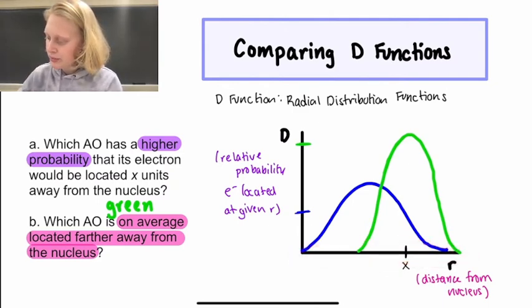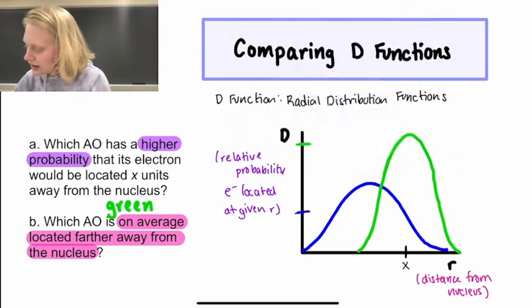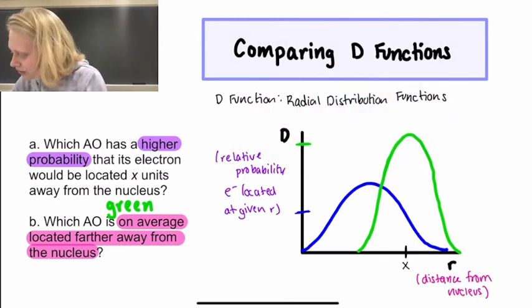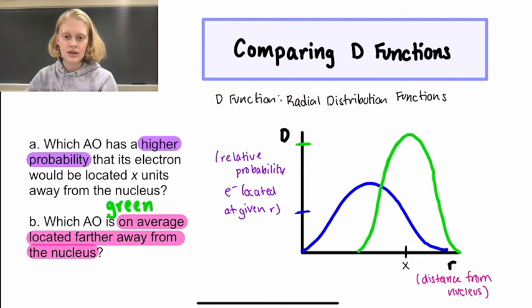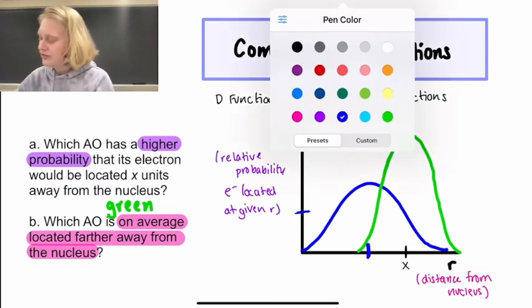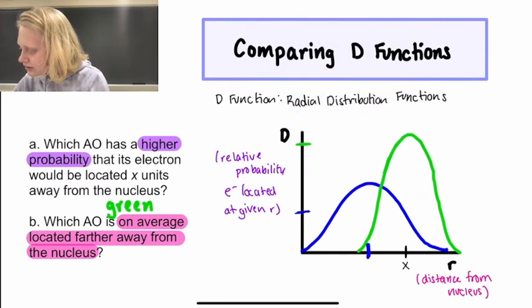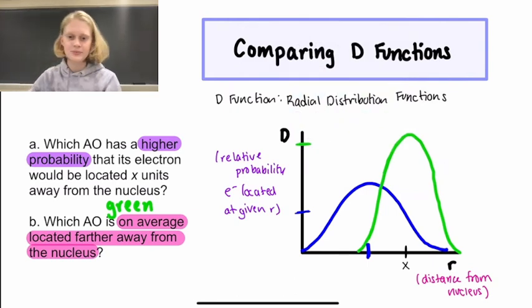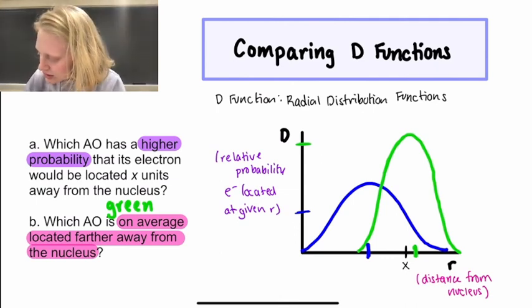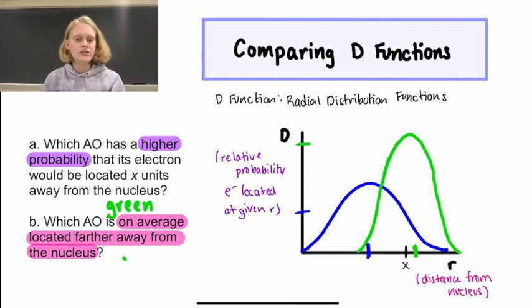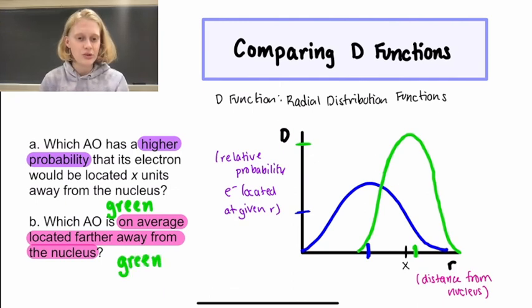So the blue function has an average value of right around here, and our green function has an average value of right around here. So if we're comparing these two values horizontally, we can see that the green one is farther away, meaning that our green atomic orbital is on average located farther away from the nucleus.